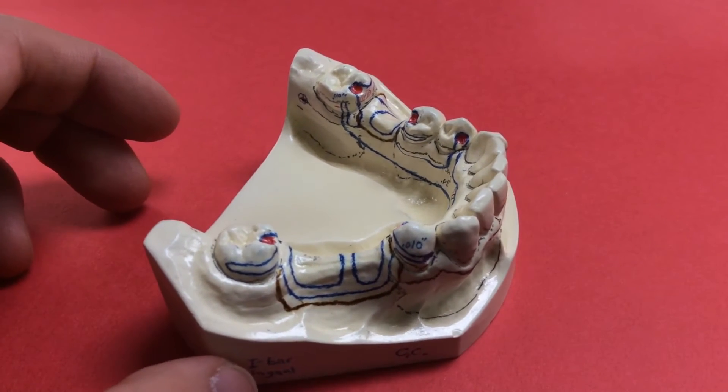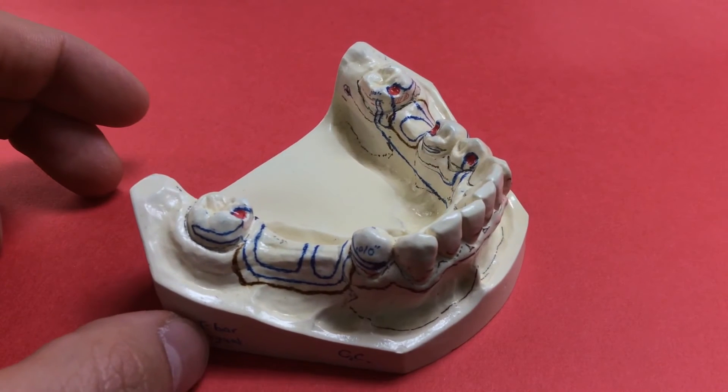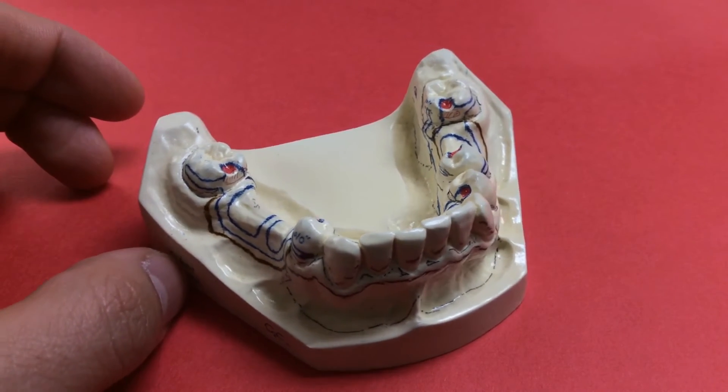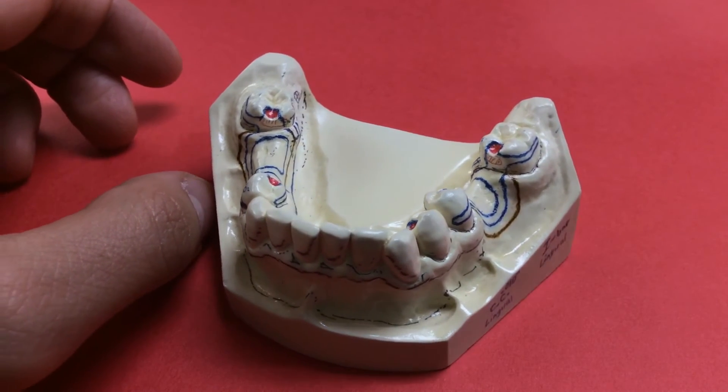You'll use a cingulum rest, and you'll use a distal guide plane. And then when you come back to the molars, you'll have a mesial rest on both of those. You'll use a guide plane, and you'll have a retentive arm and a reciprocal arm, just depending on which way it surveys out.